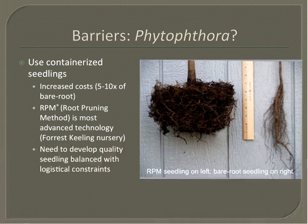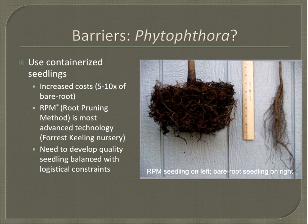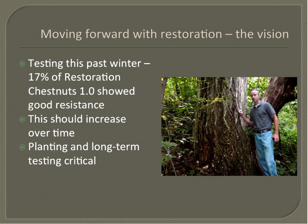To address the Phytophthora issue, we're going to look at using containerized seedlings this fall. The cost is quite high — about five to ten times more than bare root nursery seedlings. We're going to try the root pruning method, the most advanced technology from a forest nursery in Missouri called the Forest Keeling Nursery, which grows seedlings with a really fibrous root system. Our goal is to develop a seedling that we can plant efficiently in the field but that has high quality at the time of planting.